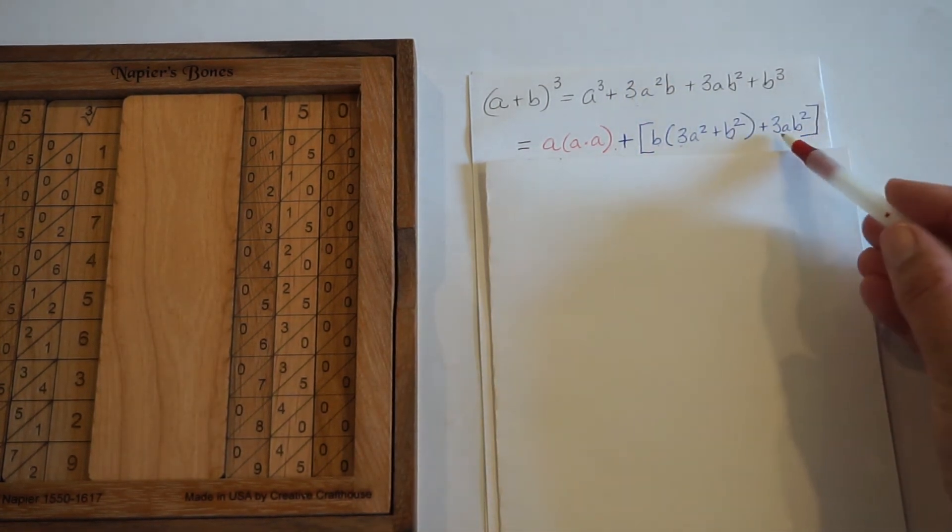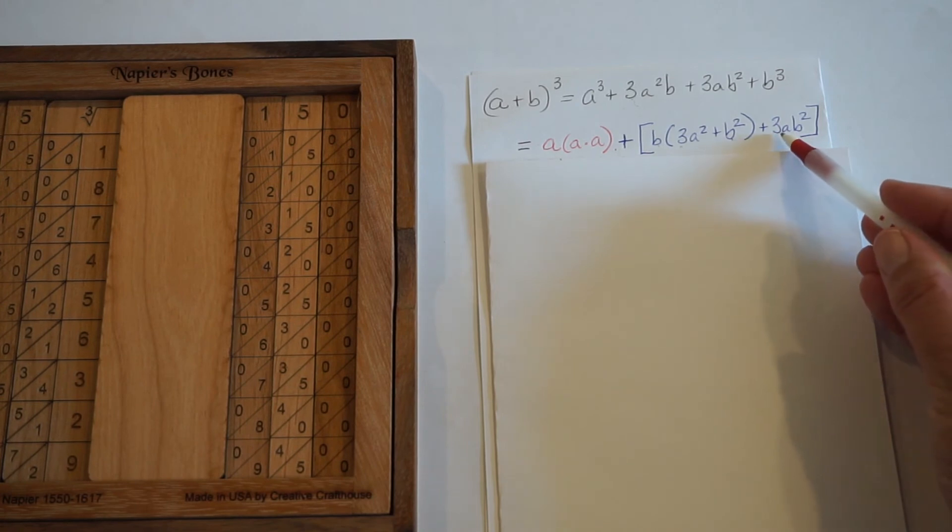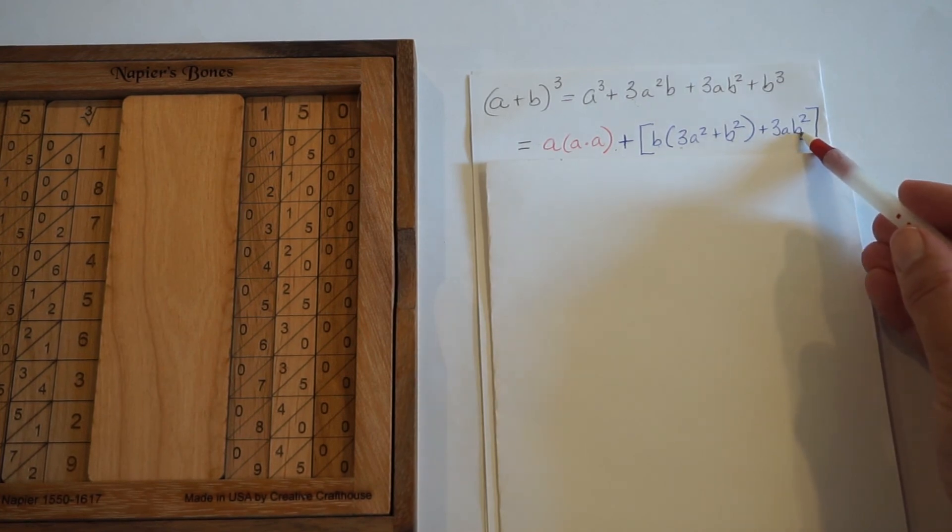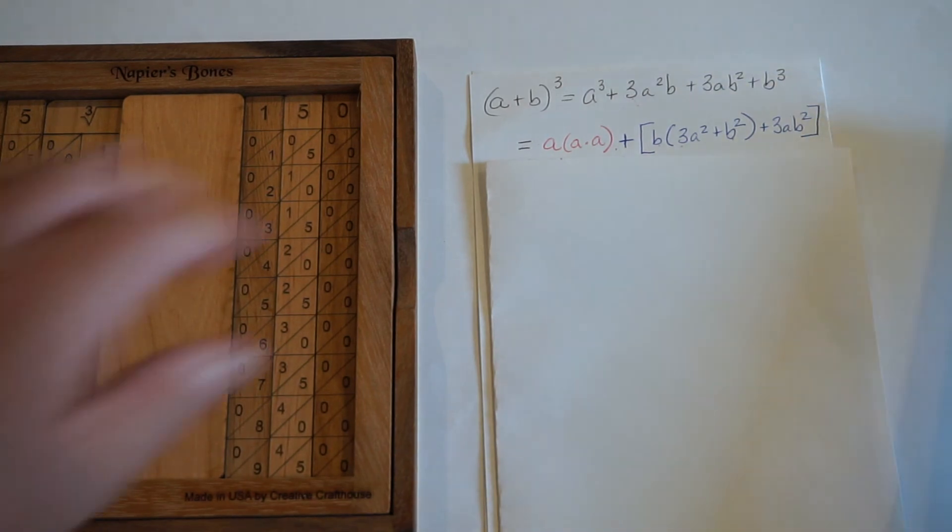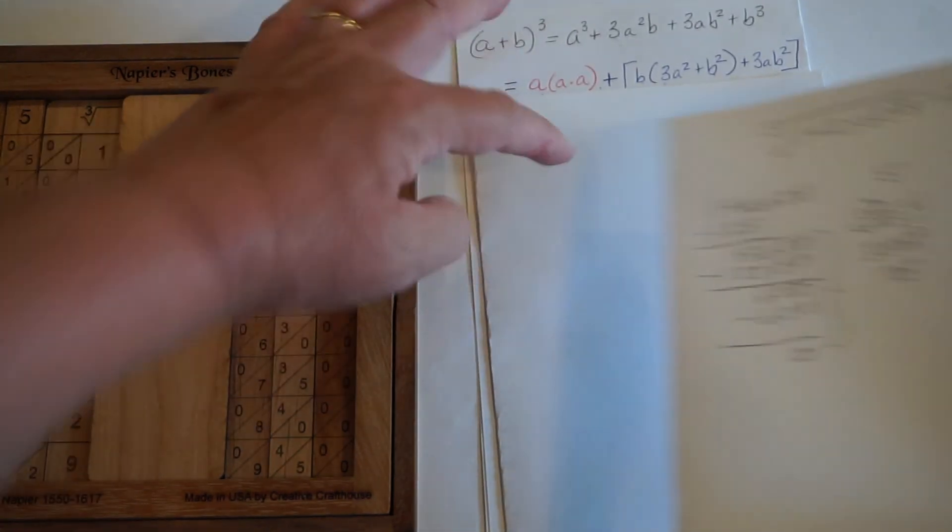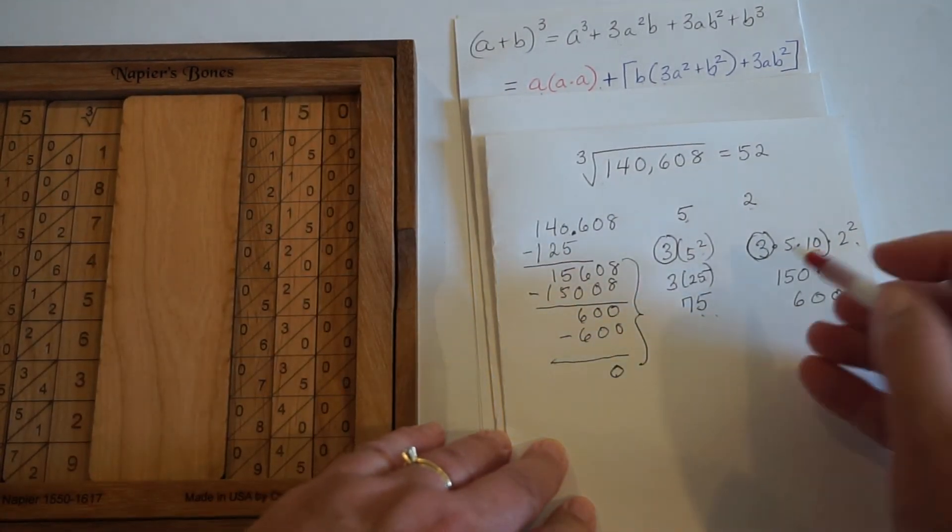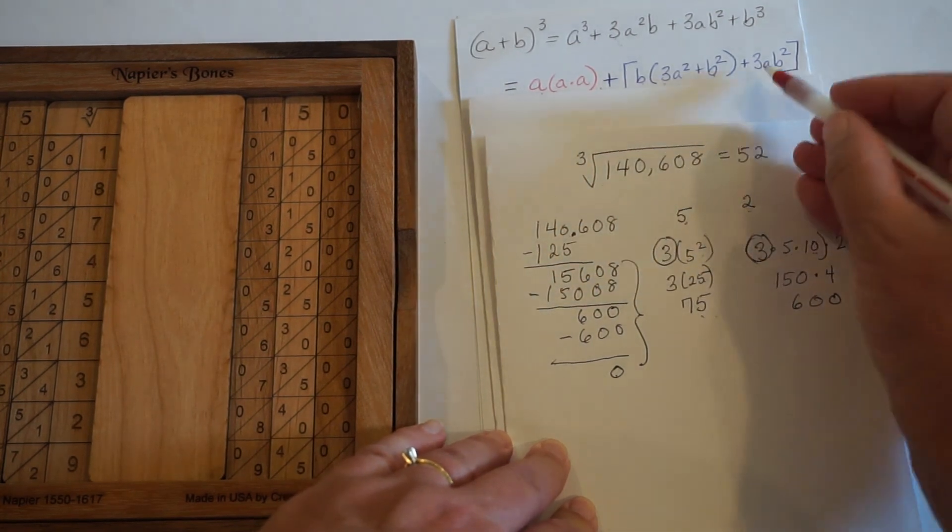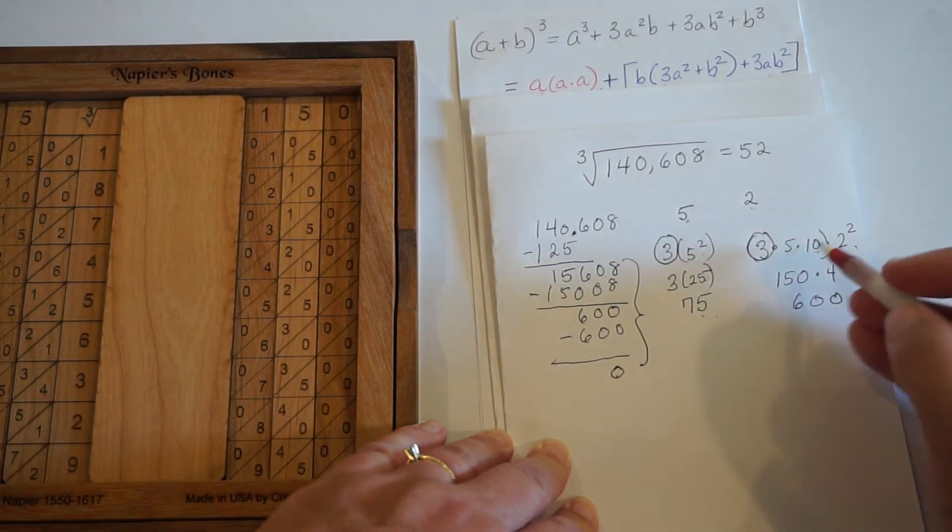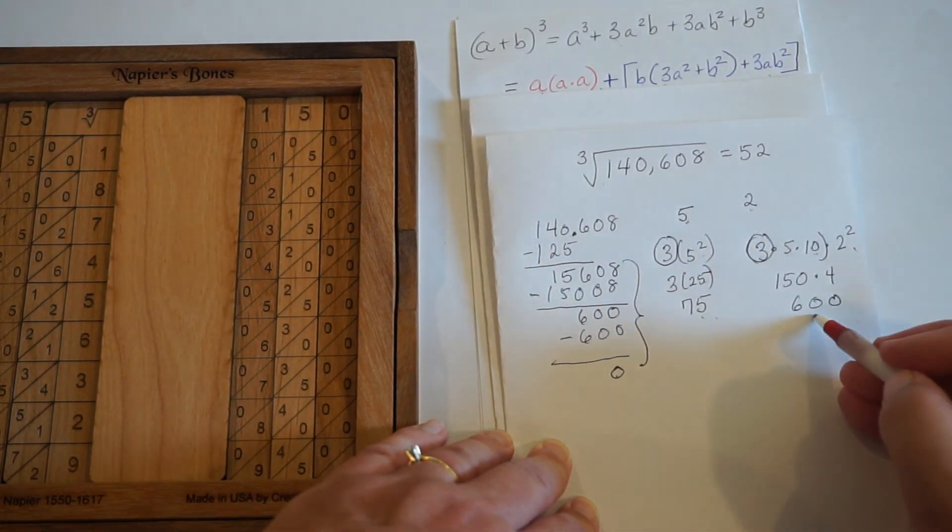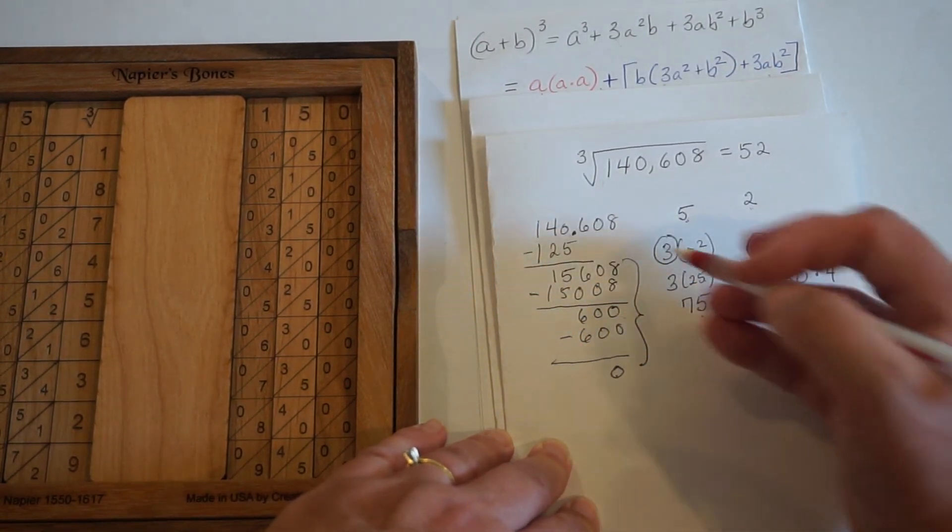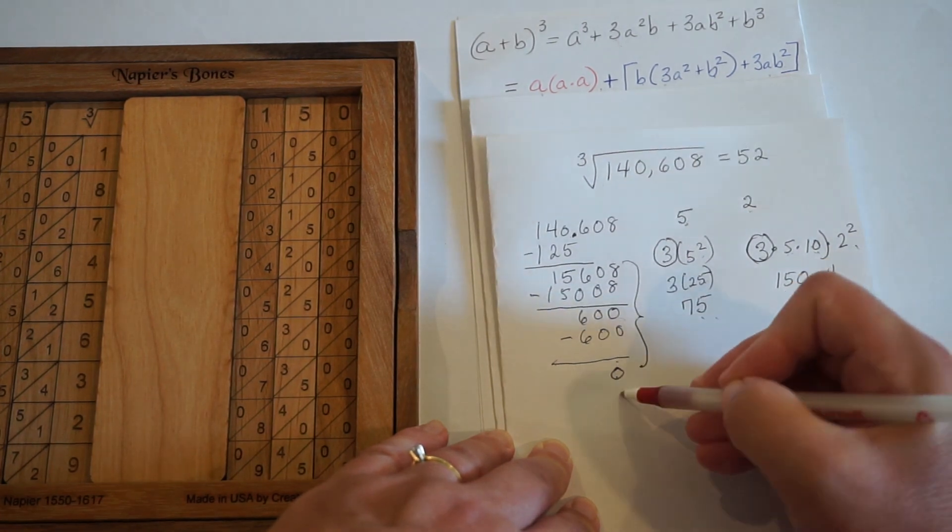But then for that last step, we needed to multiply 3 times a times 10, which had to do with place value, times our second number squared. And so that's what we were doing. Let me move this up a little bit. That's what we were doing down here when I said 3 times 5, which is our first number, times 10 for place value, times the second number squared. And that's going to give us that second piece that we are subtracting off.